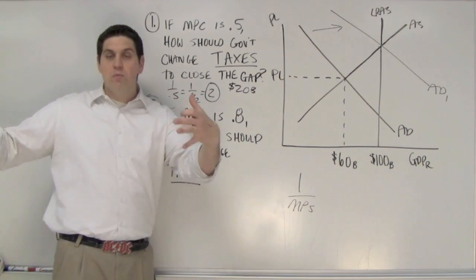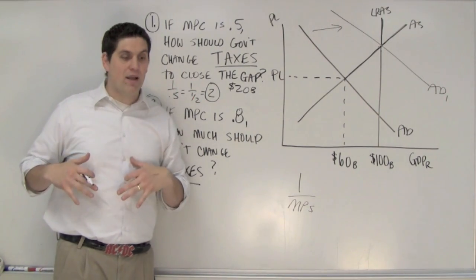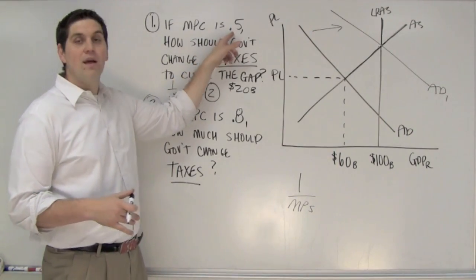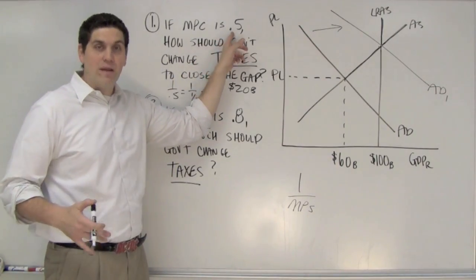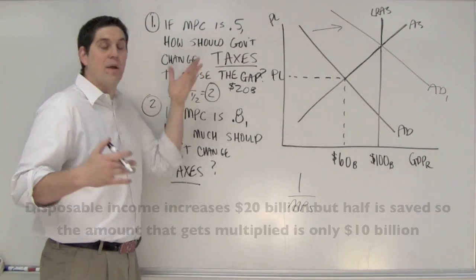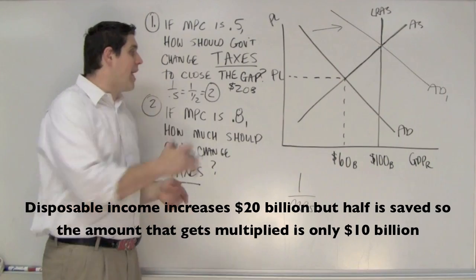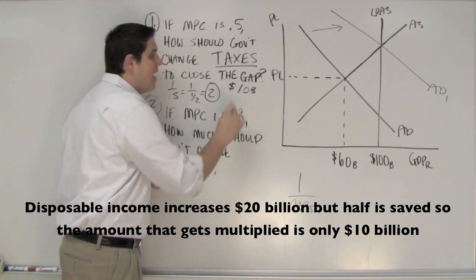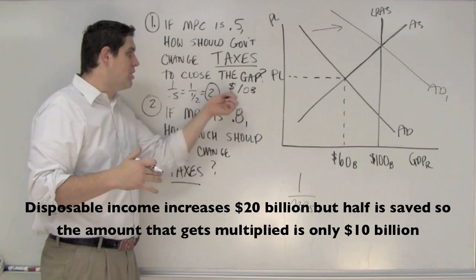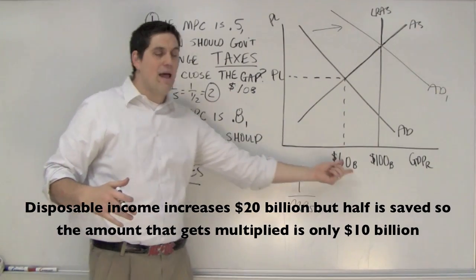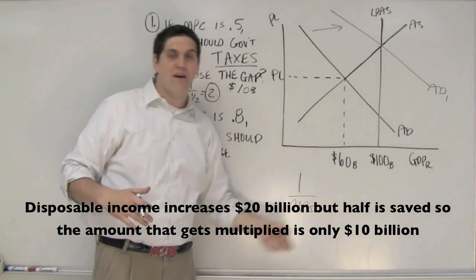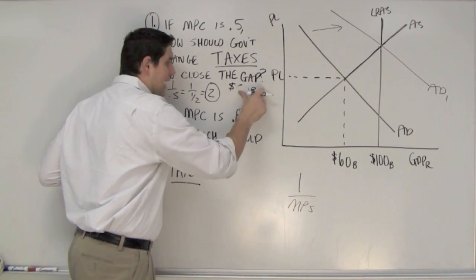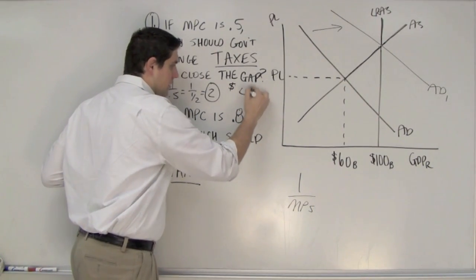So let's say we decided to cut taxes by $20 billion — what would happen? Well, consumers would have $20 billion more in their pockets. How much would they actually spend of that $20 billion? They'd only spend half — only consume half. Why? Because the marginal propensity to consume is 0.5. So only $10 billion actually gets spent in the economy. 2 times 10 does not close the gap — it only gets us halfway there. So the right answer is not $20 billion.